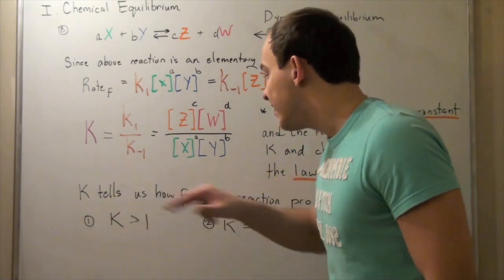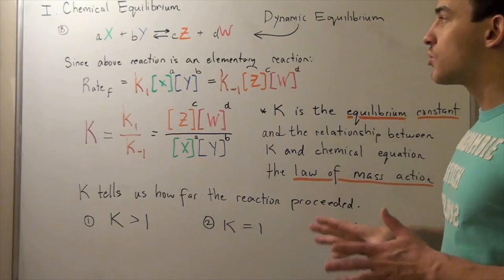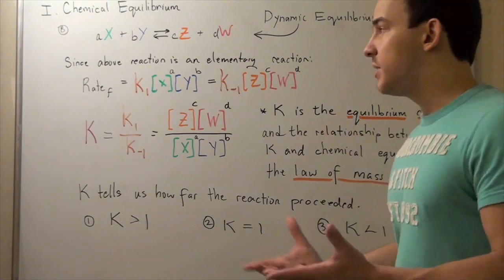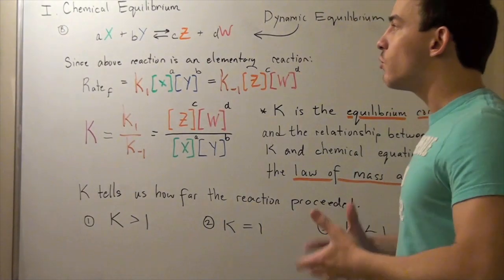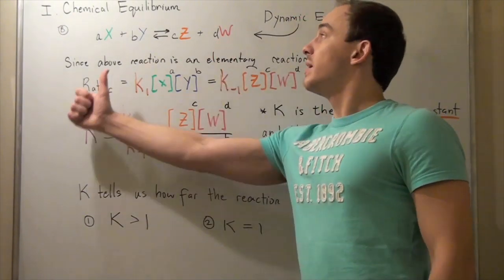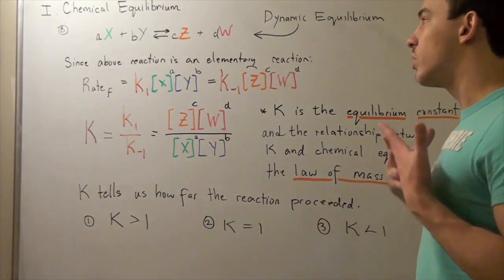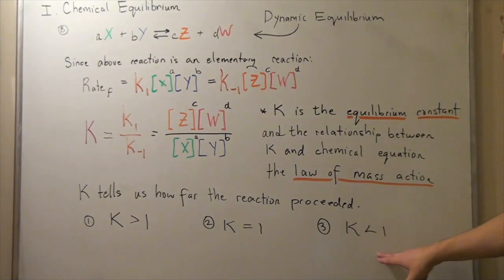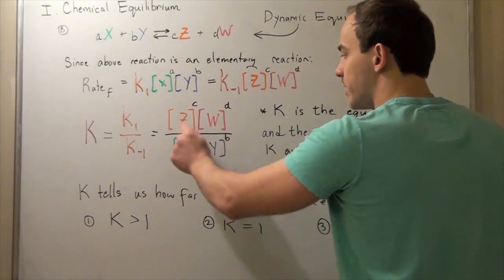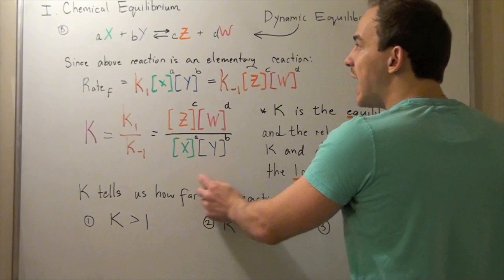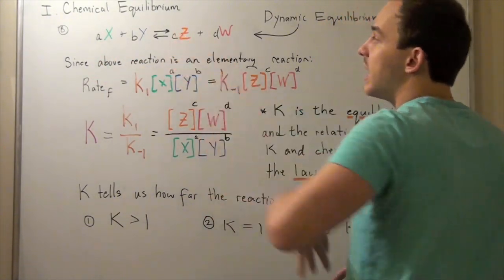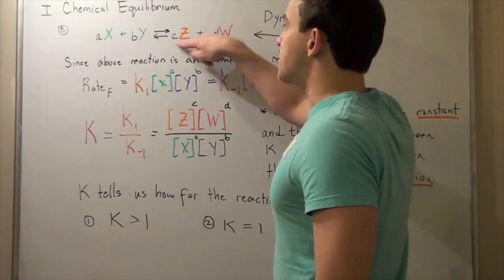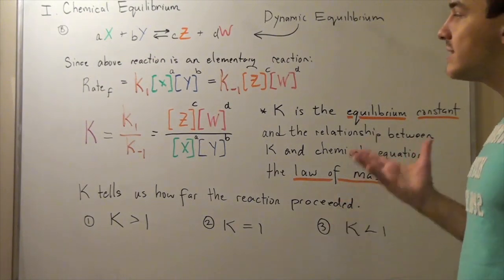We can have three situations. If K is greater than 1, that means at equilibrium we have more products than reactants — the reaction is product-favored and is spontaneous going forward. If K equals 1, the concentration of products equals the concentration of reactants at equilibrium. If K is less than 1, the denominator is larger than the numerator, meaning we have more reactants than products at equilibrium — the reaction is reactant-favored and is not spontaneous in the forward direction.